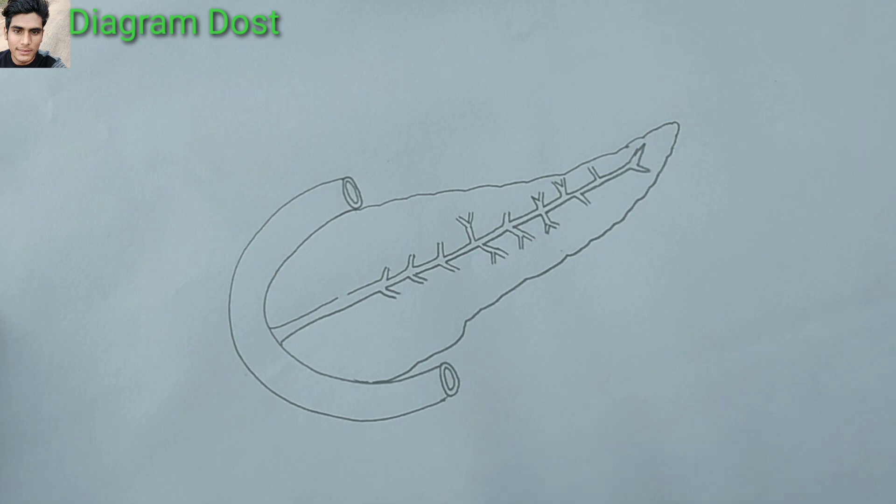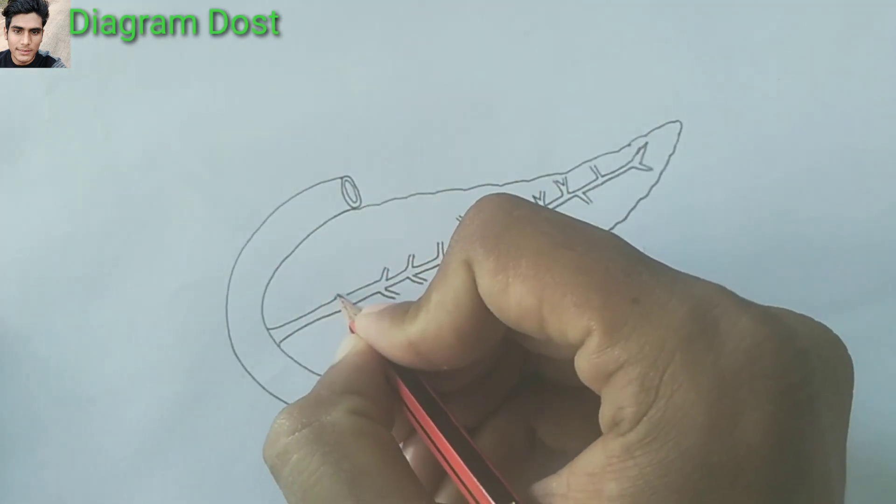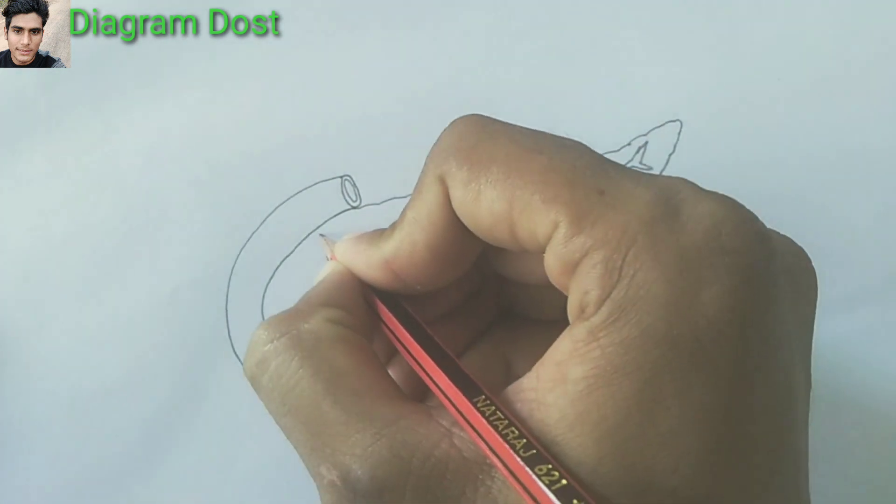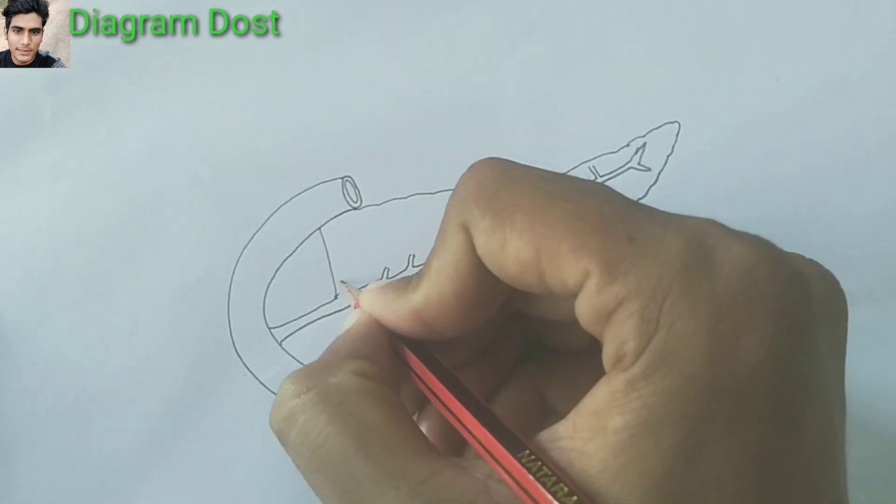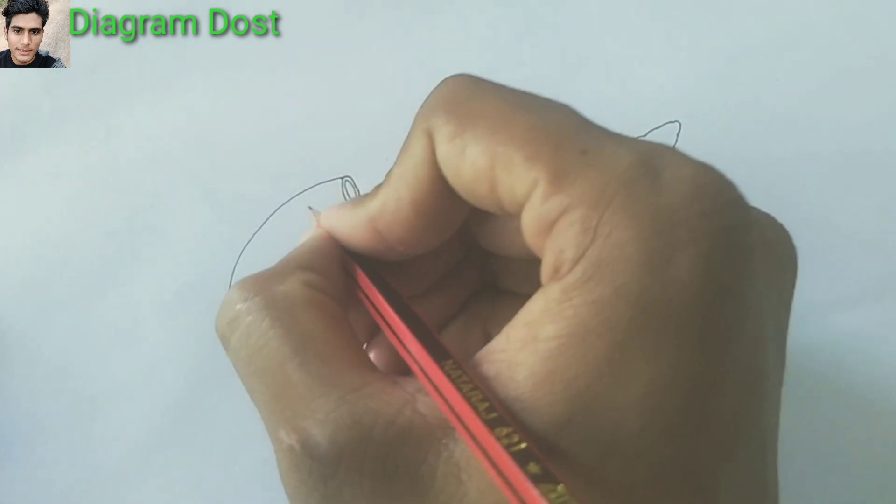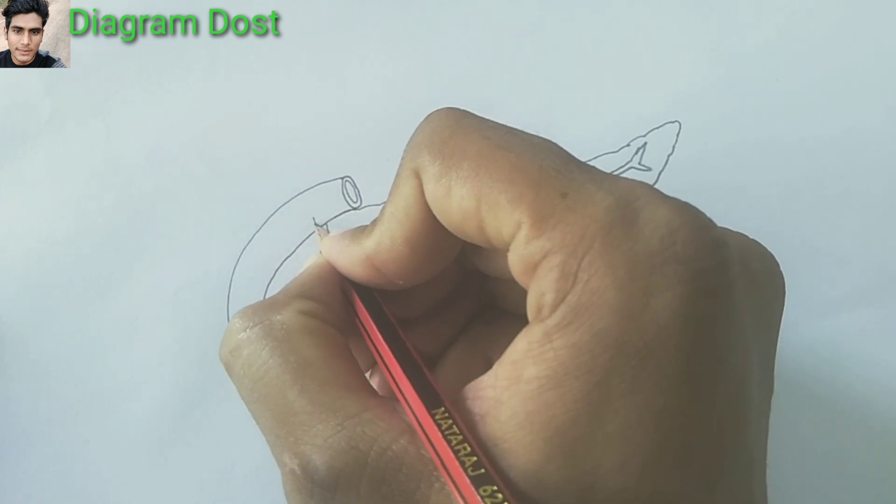Now I am drawing a duct known as the common bile duct, which is a common passage for bile juice and liver juice, also known as hepatic juice.